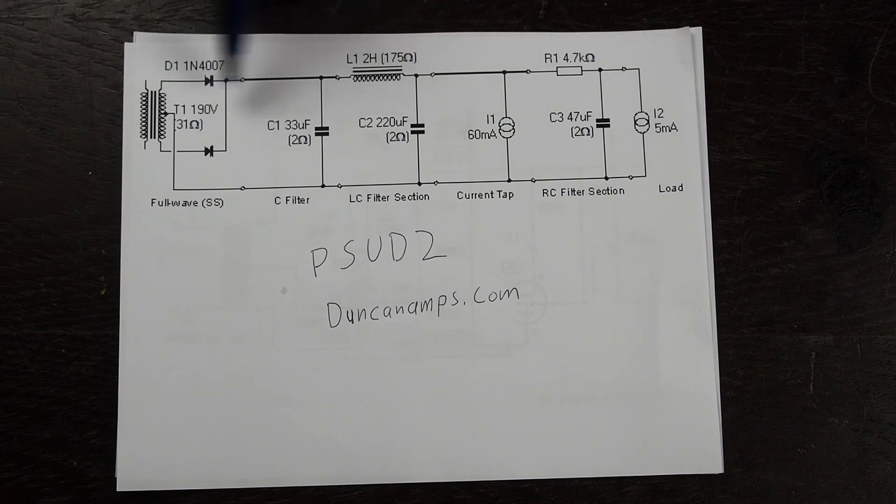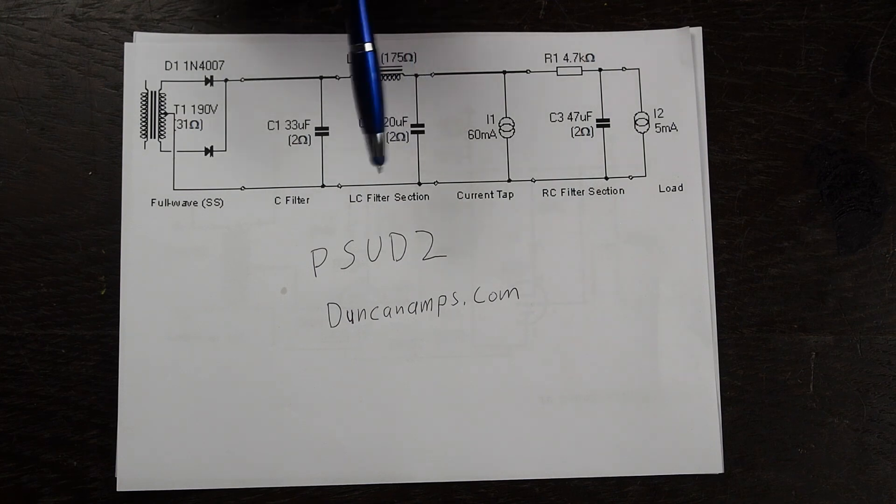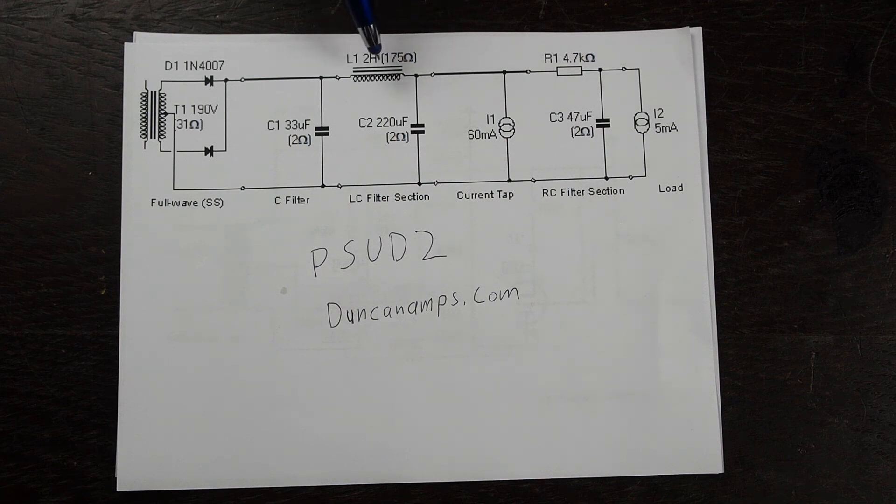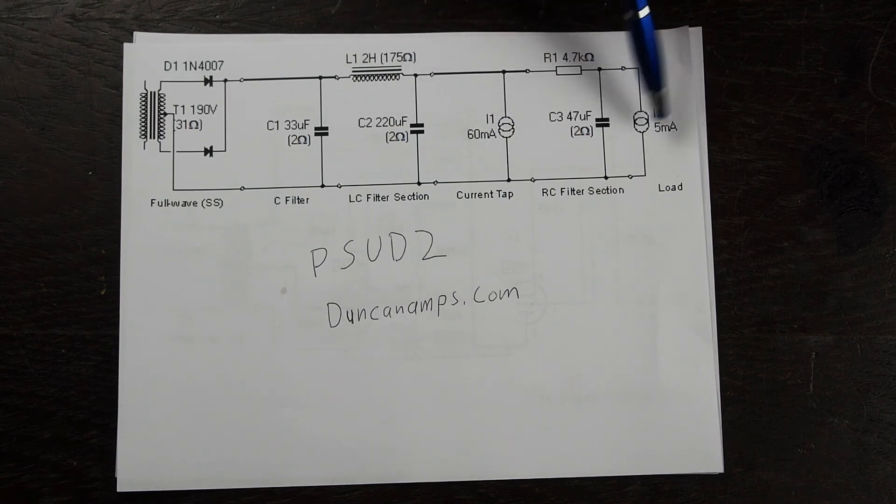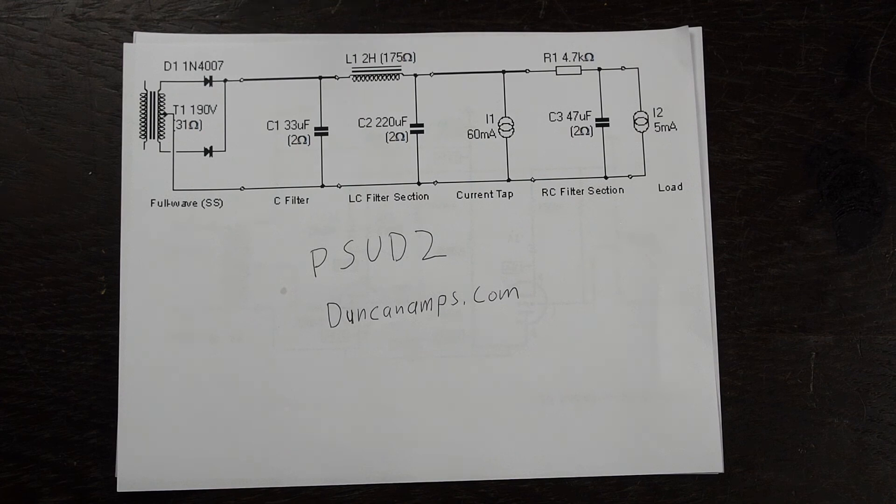I simmed this power supply using some software called PSUD2 and you can download it at duncanamps.com. It's very helpful in making sure that you have enough filtering in the circuit. When I look at the sim there's only a 0.04 volt ripple in the voltage at this point and it's at 0.001 something at this point in the driver tube where it's most sensitive, so that's showing me that this is enough filtration to make sure that the amplifier doesn't have any AC hum in it.